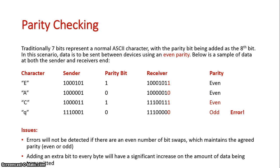I hope this helps you understand how parity checking works. Basically, if there's an even amount of 1s, it's considered an even parity. An odd amount of 1s means an odd parity. And during handshaking, computers will designate whether they want data to be sent with an even or odd parity.